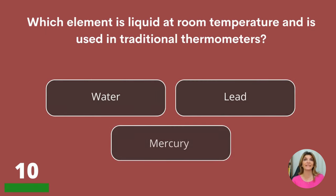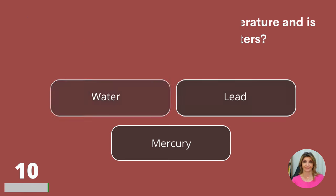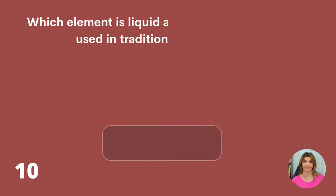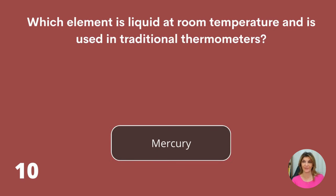Which element is liquid at room temperature and is used in traditional thermometers? Water, lead, or mercury? Mercury.